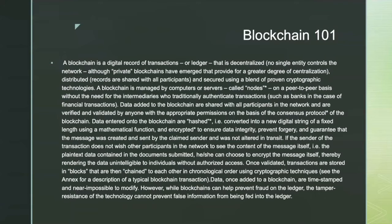Blockchain 101: a blockchain is a digital record of transactions, or a ledger, that is decentralized — no single entity controls the network, although private blockchains have emerged that provide a greater degree of centralization. Records are distributed and shared with all participants, and secured using a blend of proven cryptographic technology. Blockchain is managed by computers or servers called nodes on a peer-to-peer basis, without the need for intermediaries — such as banks — who traditionally authenticate transactions.